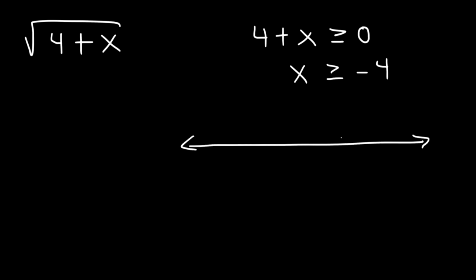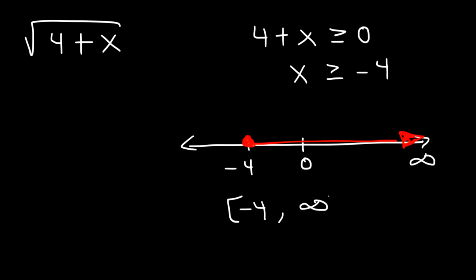If you graph the solution on a number line — you don't have to, but if you choose to — this is how the solution is going to look. We're going to have a closed circle, and because x is equal to or greater than negative 4, we're going to shade towards the right. So the domain is from negative 4 to infinity, and since it includes negative 4, we need to use brackets.